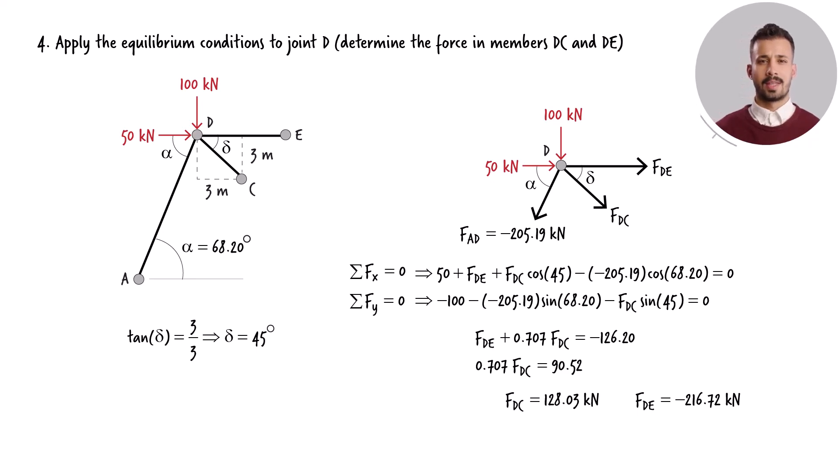Therefore, member DC is subjected to a tensile force of 128 kN, whereas member DE experiences a compressive force of 217 kN.